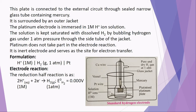When written in reverse — platinum in contact with H₂ gas at 1 atmosphere pressure in contact with H⁺ ion 1 mol — it is the representation of the anode, where the oxidation half reaction is written. As it is a cathode, the reduction half reaction is written. When written as anode, the oxidation half reaction is written.